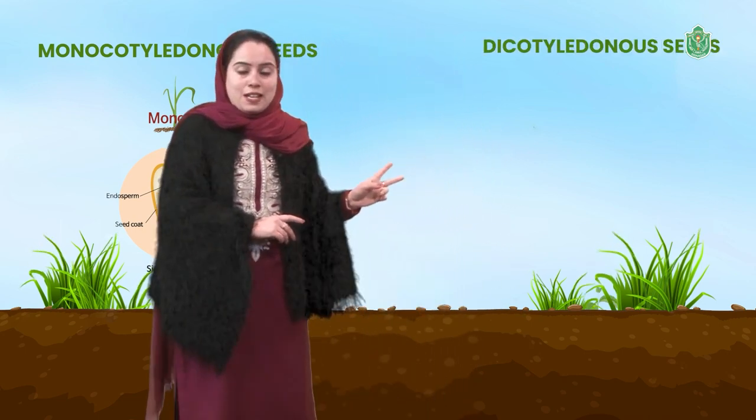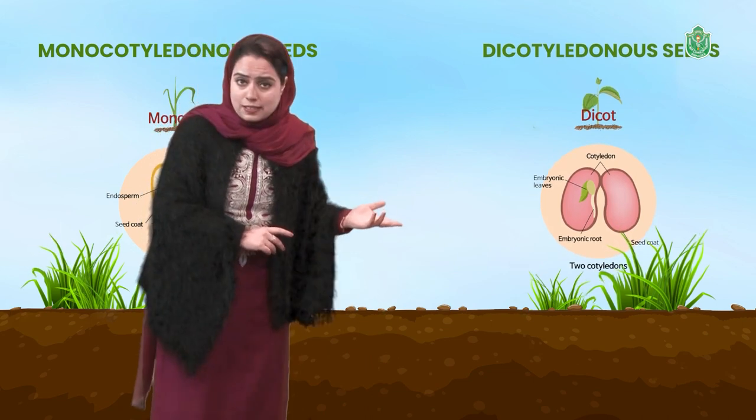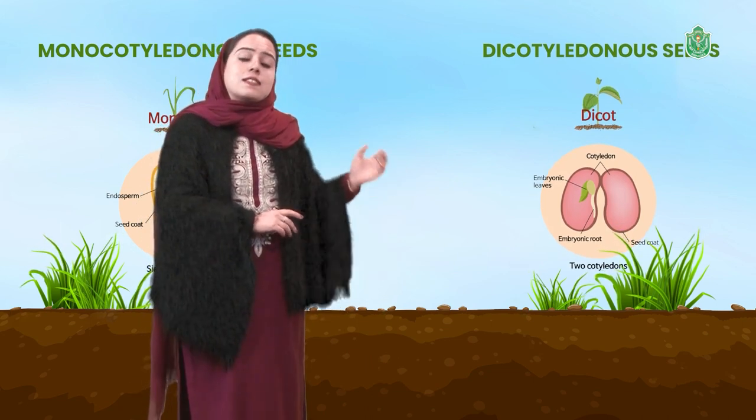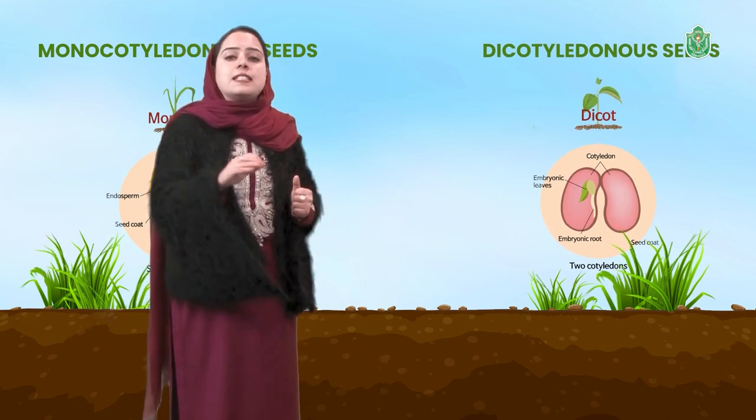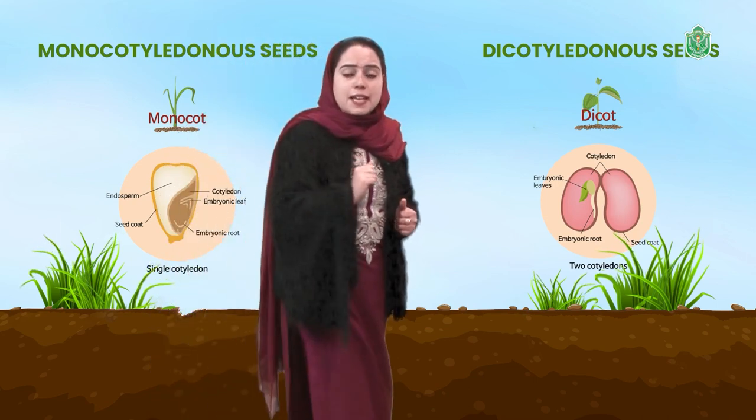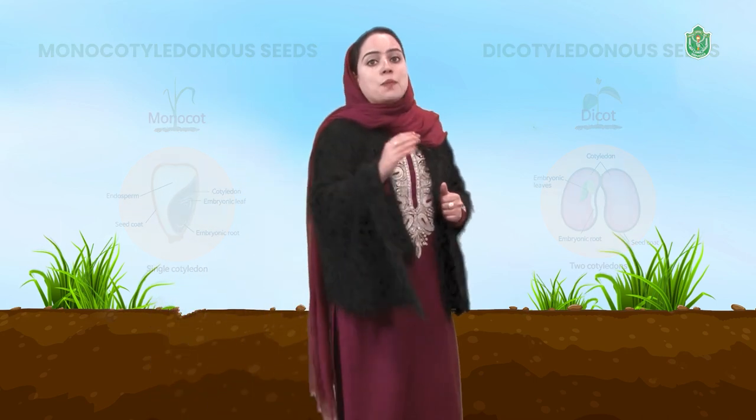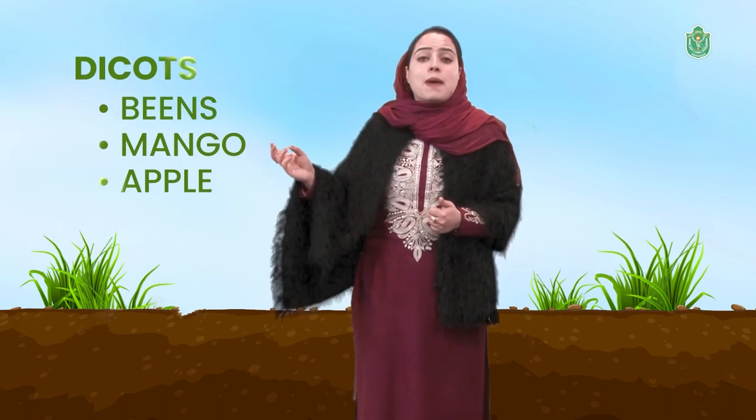A seed that has two cotyledons is known as dicotyledon, and such plants are known as dicots. Examples of monocotyledon seeds: rice, maize, all types of grasses. Dicots: beans, mango, apple, etc.